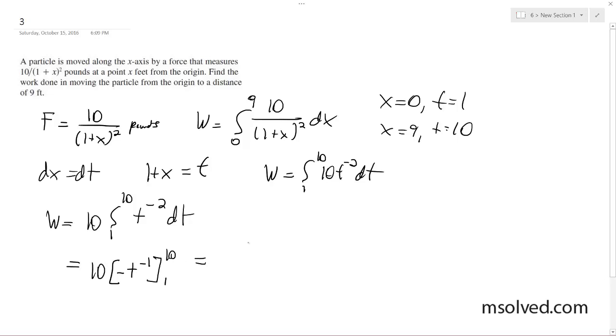So what we end up with here is 10 times negative 1 over 10 plus 1, which equals 10 times 9 over 10, giving us 9. And this equals 9 foot-pounds of work.